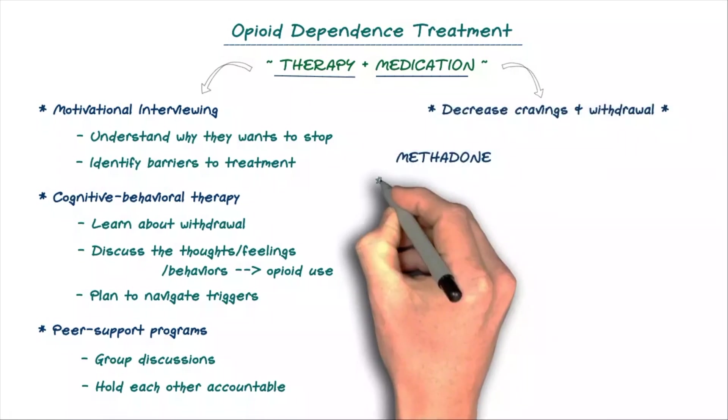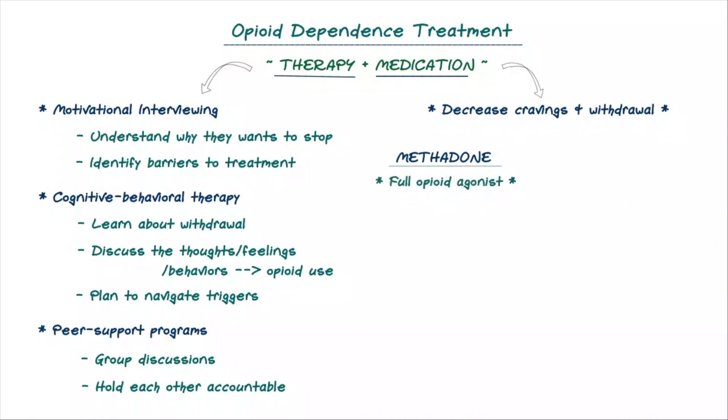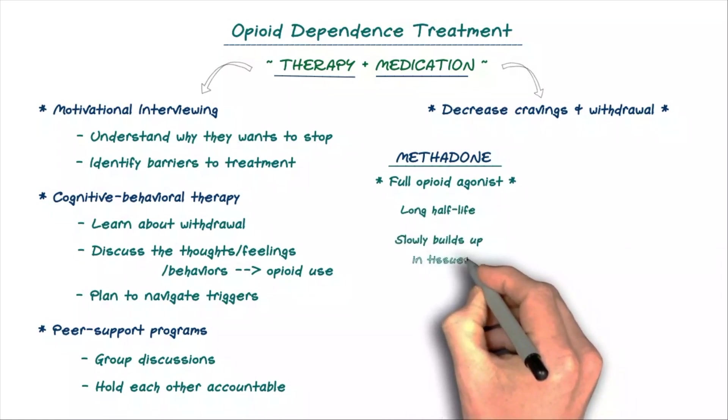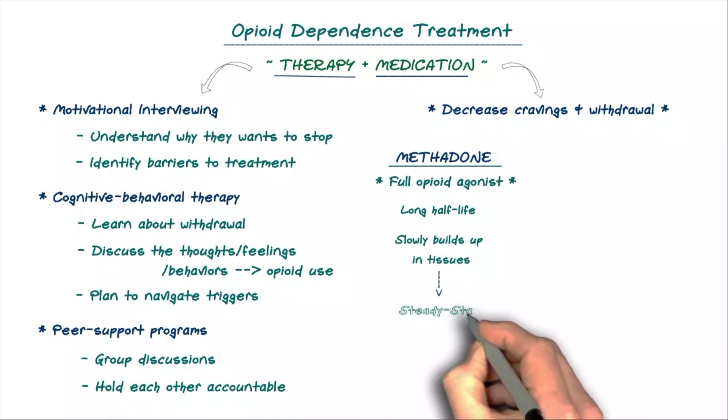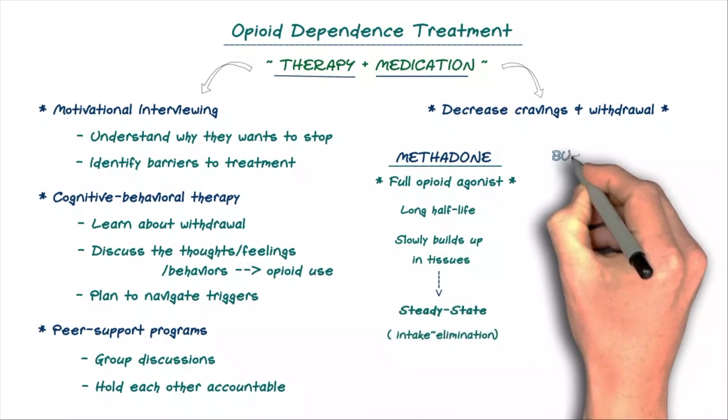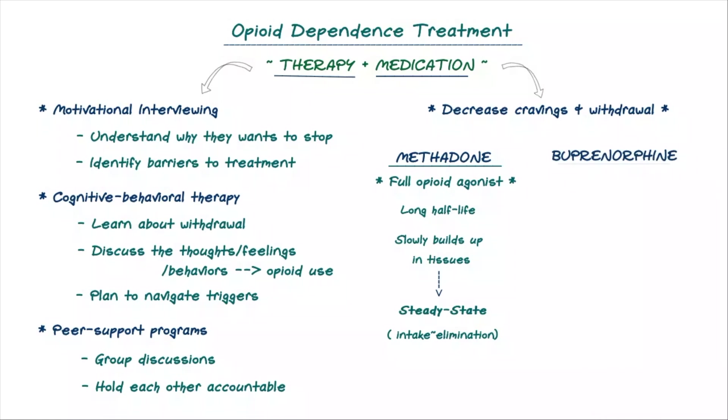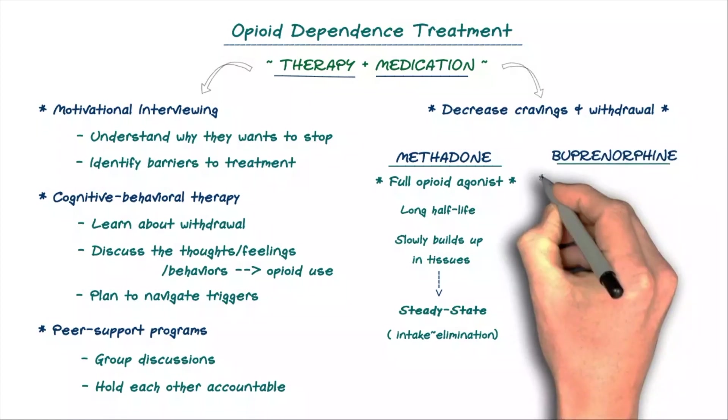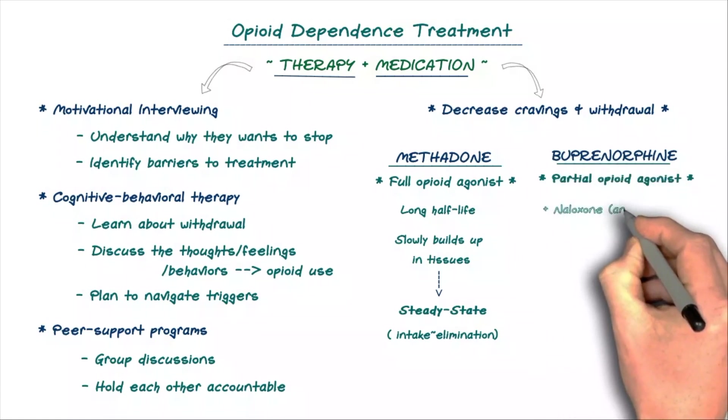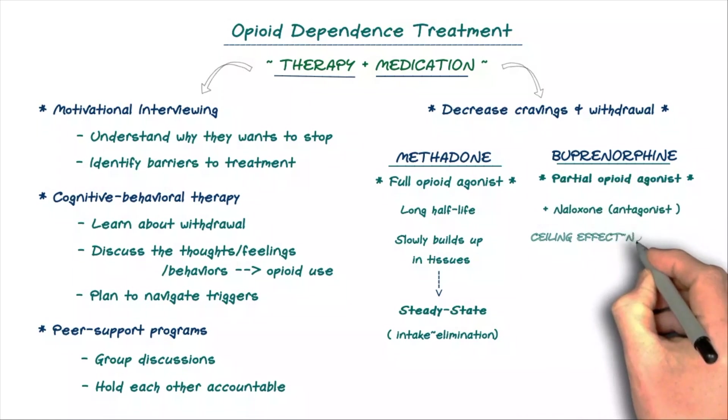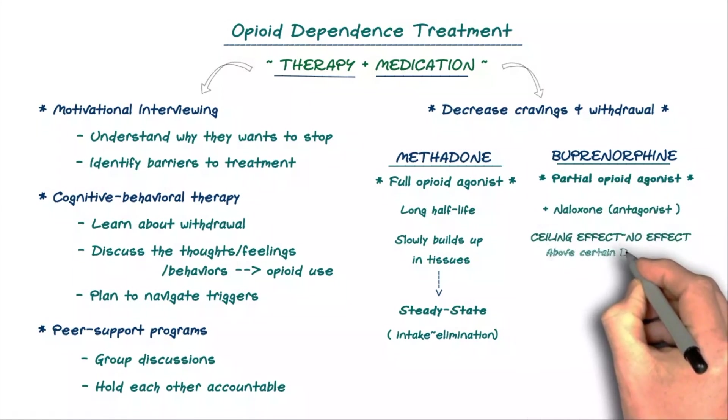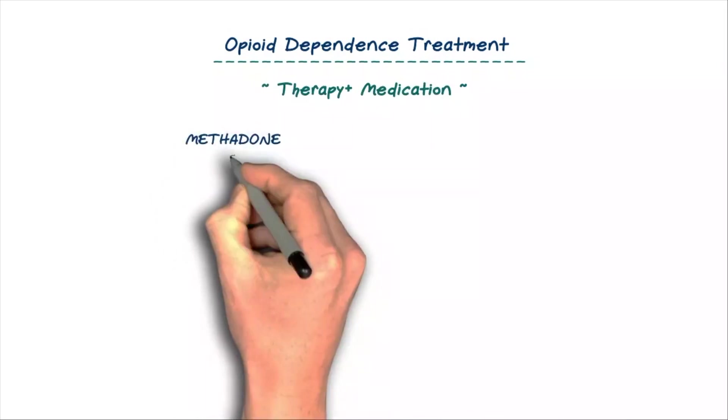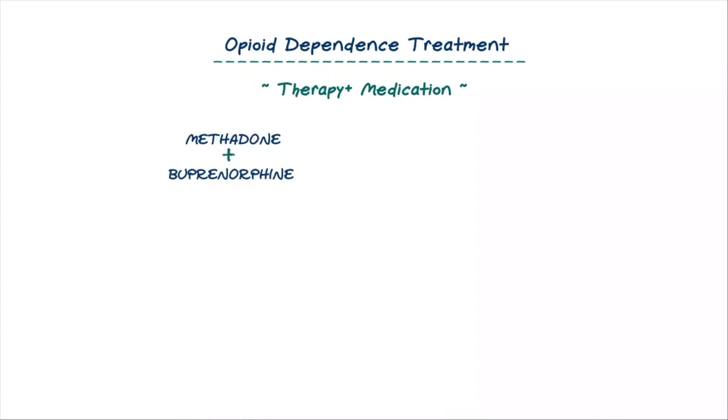Methadone is a full opioid agonist with a long half-life that slowly builds up in the tissues over time, allowing it to reach a steady-state level within a week. Steady-state refers to the situation where the overall intake of the drug is more or less in balance with its elimination so that body is exposed to a stable level. In contrast, buprenorphine is a partial agonist that is sometimes given in combination with naloxone, forming an agonist-antagonist combination.